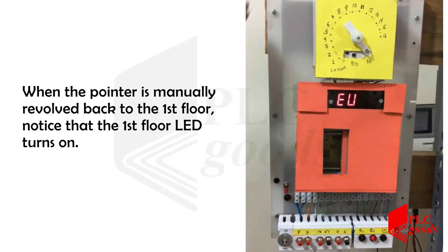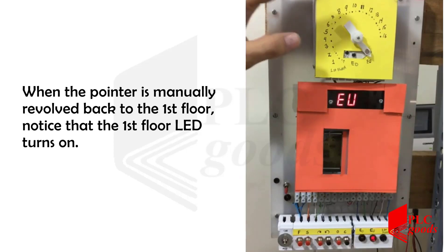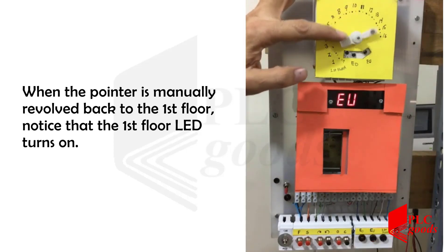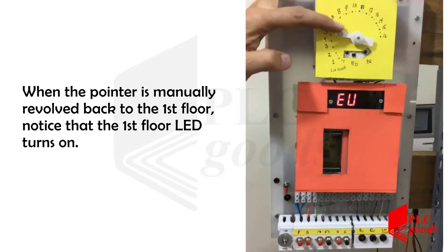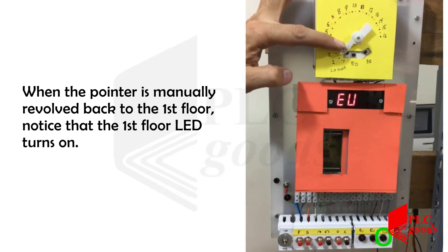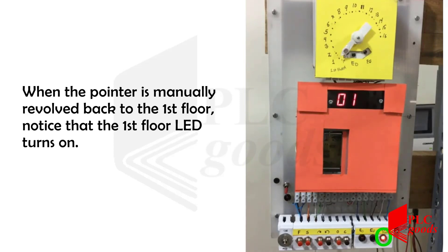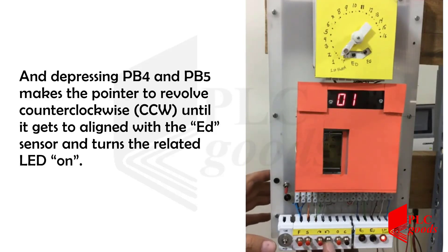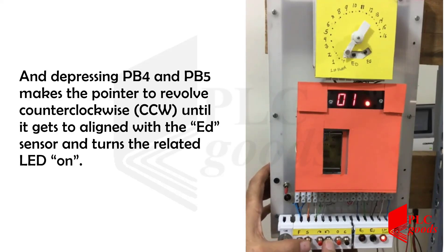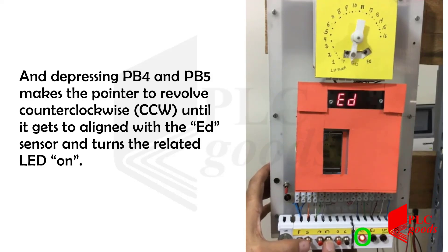When the pointer is manually revolved back to the first floor, notice that the first floor LED turns on. Depressing PB4 and PB5 makes the pointer revolve counter-clockwise until it is aligned with the ED sensor, turning the related LED on.